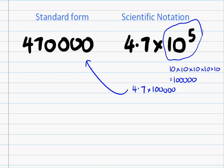That's one way you can convert — you can work out what 10 to the power is, then multiply it by 4.7 or whatever your number is to get your answer. But there is an easier and faster way, which I'll show you right now. If you want to convert from scientific notation to standard form...